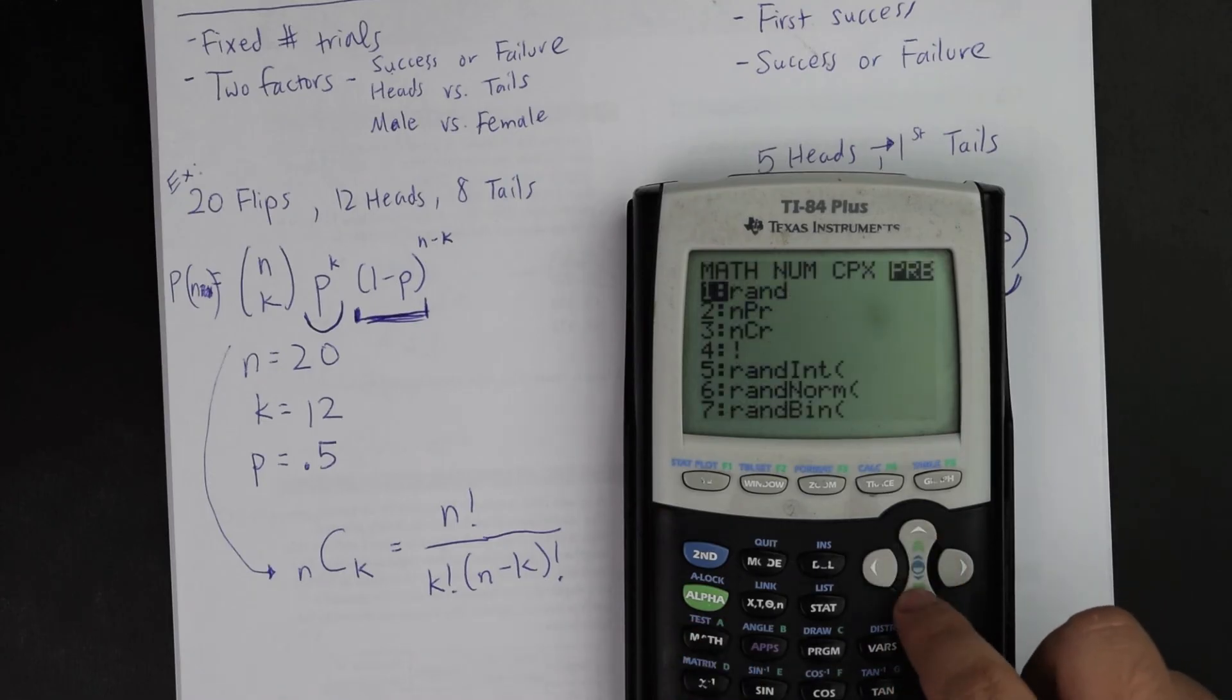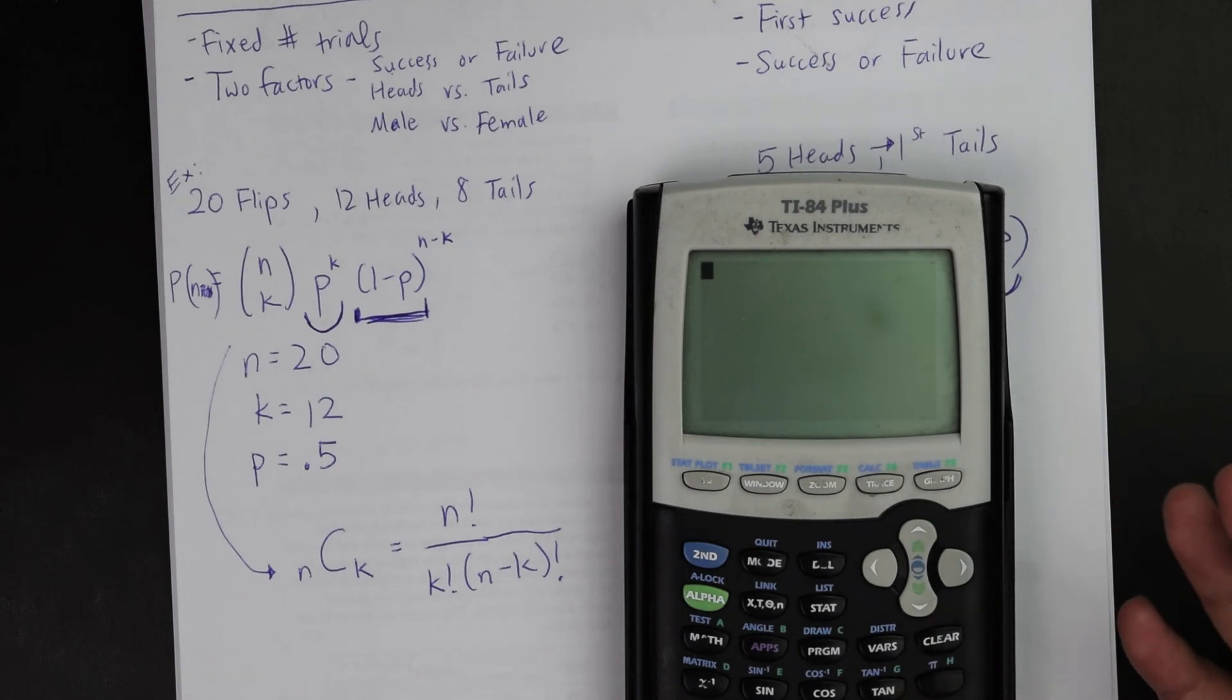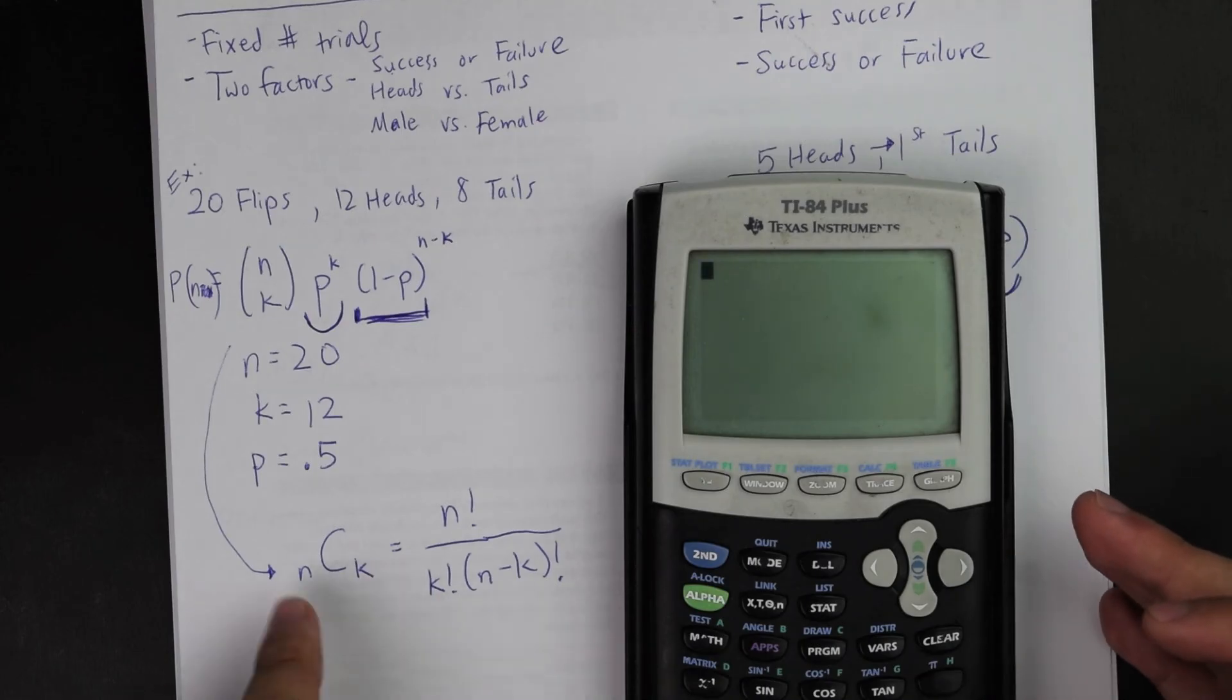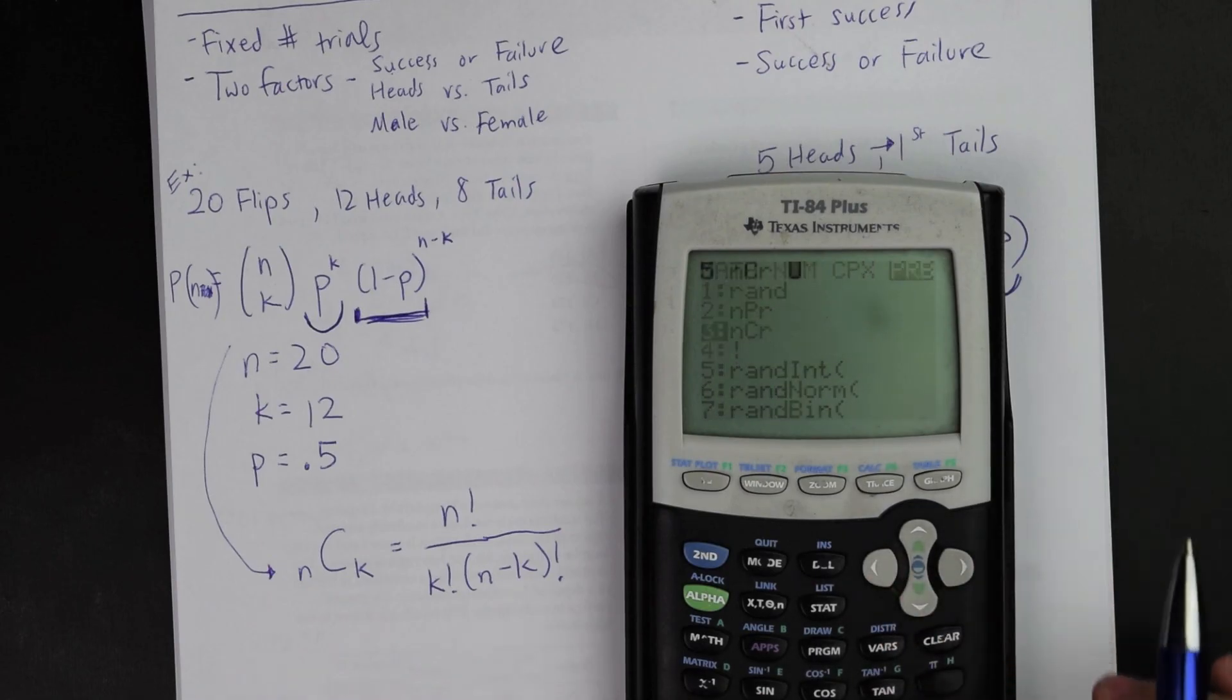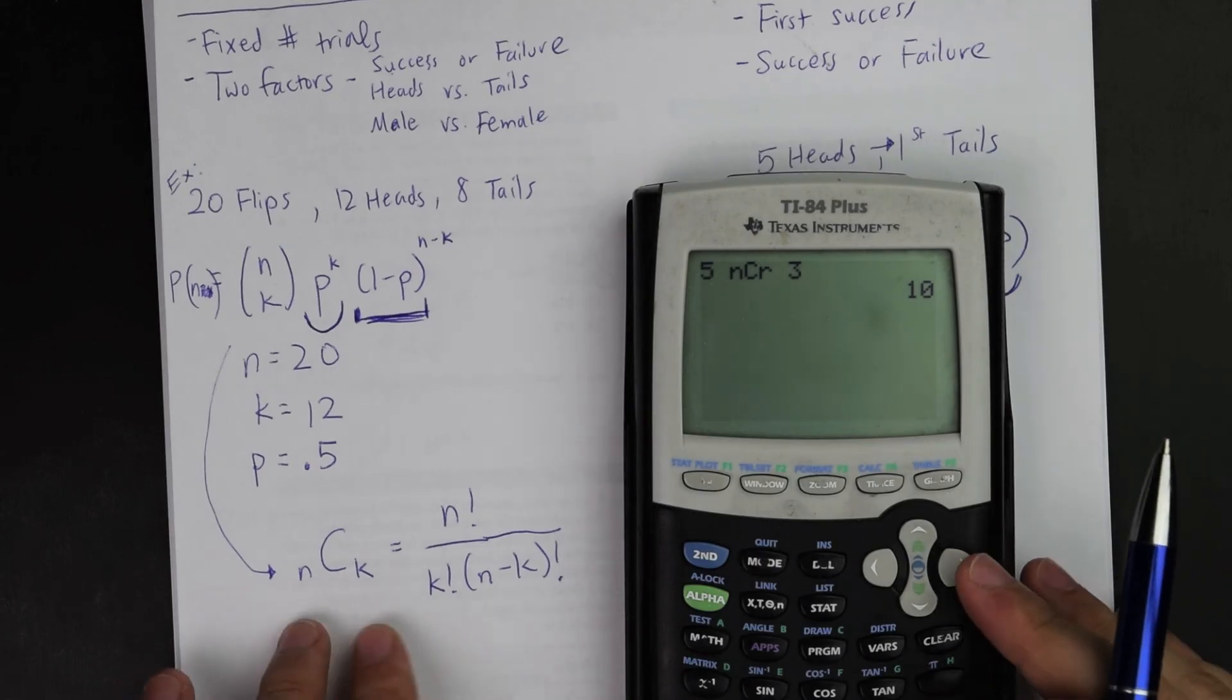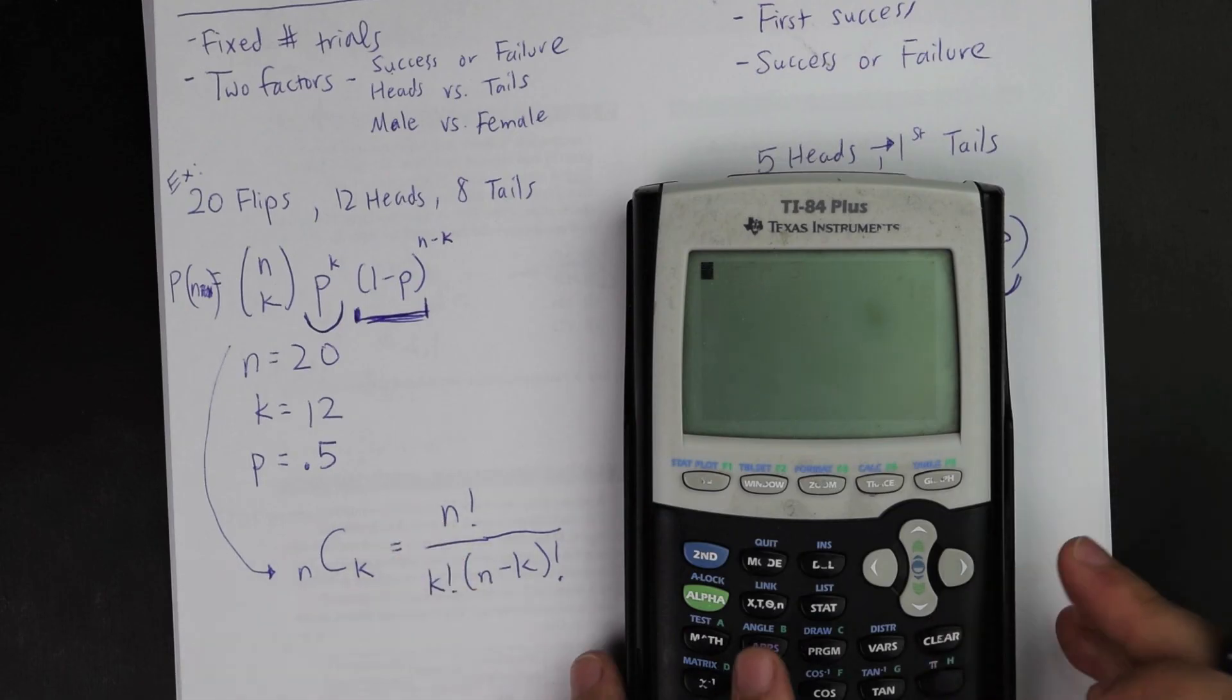And you're going to push the arrow key to probability, NCR is actually provided right here. But how, at least for my calculator, how it works is, let's say I want to know 5C3. So I'm going to type 5, math, go to probability, go to NCR, 3, and it will give you the specific value. And that was just a random example I provided, but just be aware that you could actually punch it out real quick rather than having to compute this out.